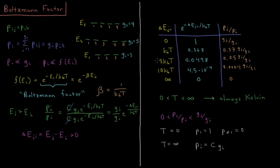If the energy difference is 3 kT, then you're about 20 times less likely to observe state J than state I. At 10 kT, the probability becomes one part per 10,000, and then smaller and smaller from there. So if the energy level is infinitely above, there's a zero percent chance of observing state J. Basically, the bigger the energy separation gets, the less likely we are to observe the higher energy state.